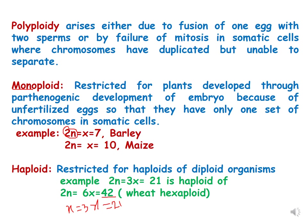The monoploid term is restricted for plants which develop through parthenogenesis, and because they develop due to unfertilized eggs, they have only one set of chromosomes in somatic cells. For example, in barley, the somatic cells have seven chromosomes only and this is present in only one set, so this is 2n = x = 7.